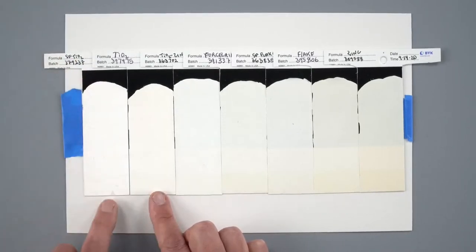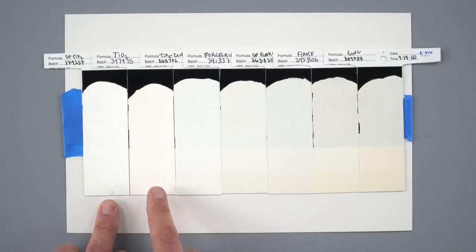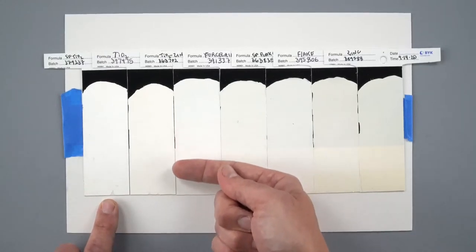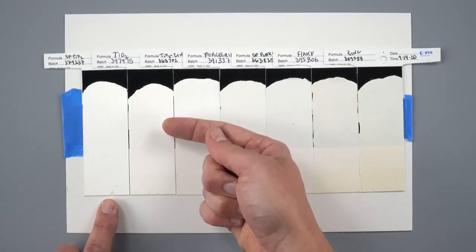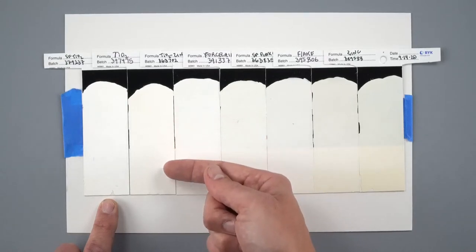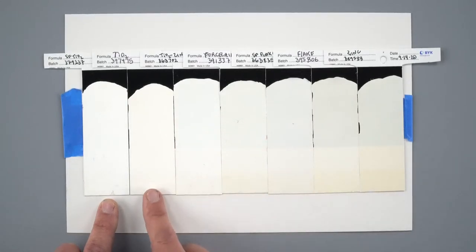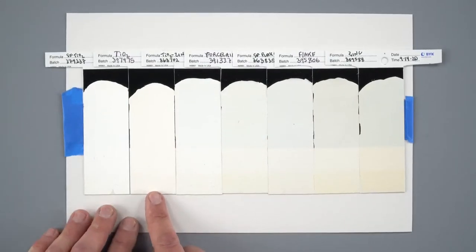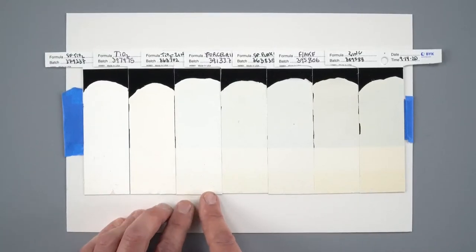So safflower titanium white, regular titanium white - notice how you cannot see really the difference between the black under and the white under that titanium white. It's a very opaque color, right? Not much in the ways of translucency there.